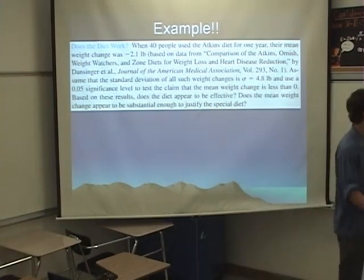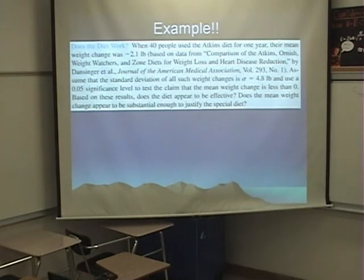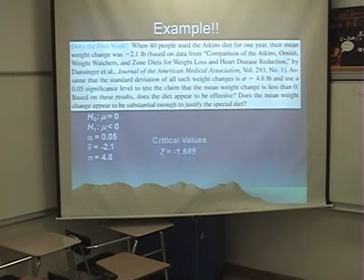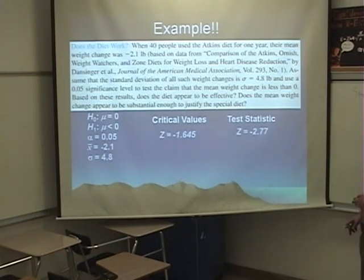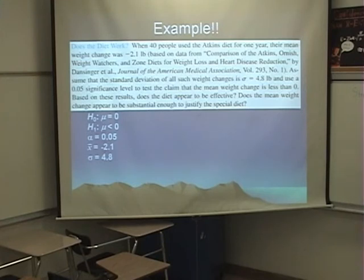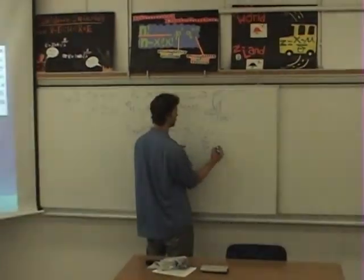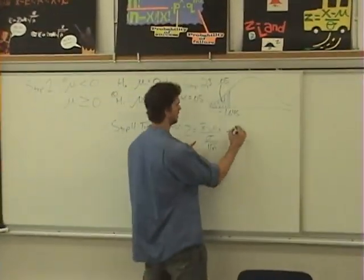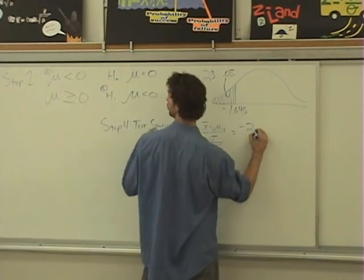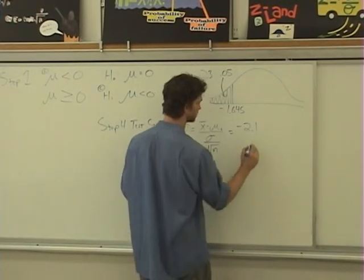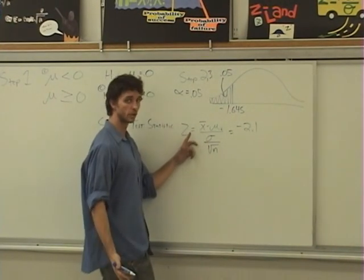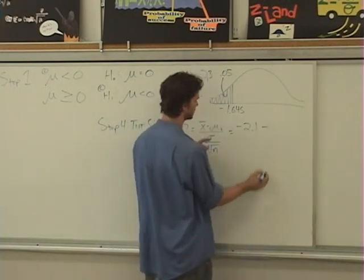Was negative 2.1 pounds. And our sigma was 4.8 pounds. So let's come back over here and we will roll with this. And what we have this time is we have a little bit of what? Right here. So we've got x-bar is negative 2.1 pounds. That was our x-bar. Minus mu.